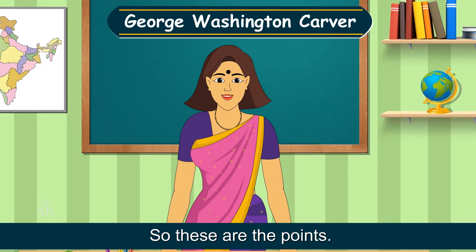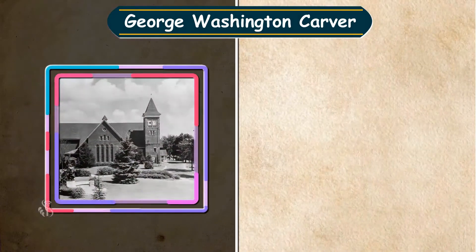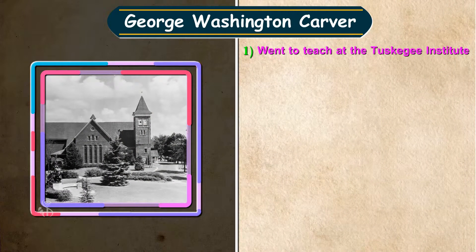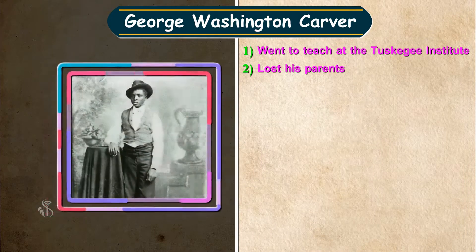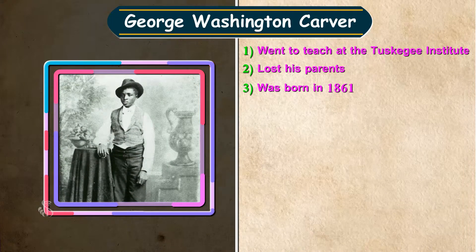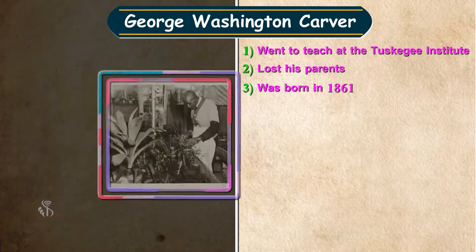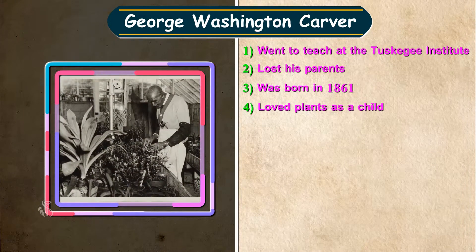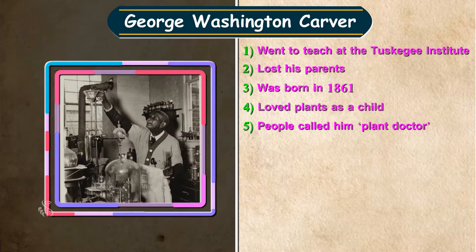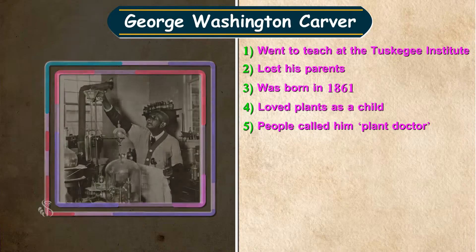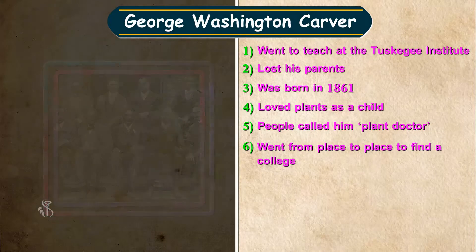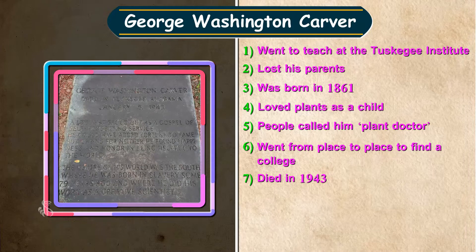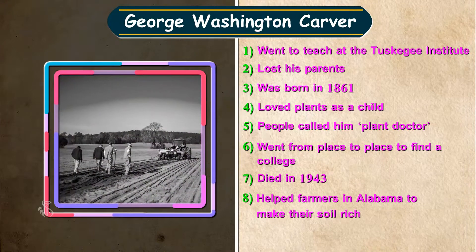These are the points: one — went to teach at the Tuskegee Institute in Alabama; two — lost his parents; three — was born in 1861; four — loved plants as a child; five — people called him plant doctor; six — went from place to place to find a college.